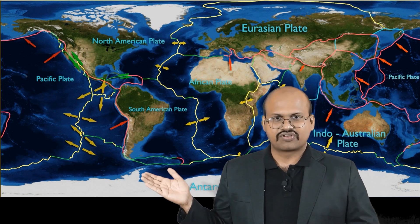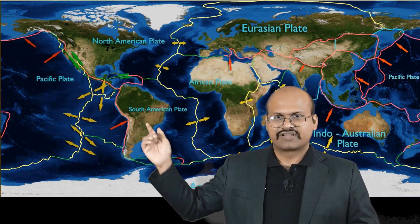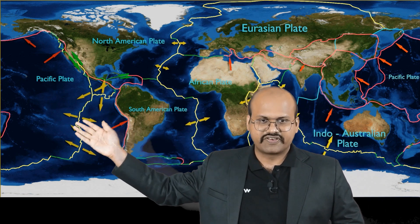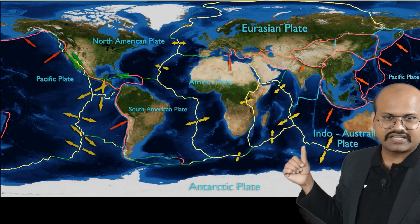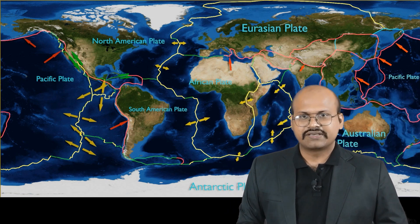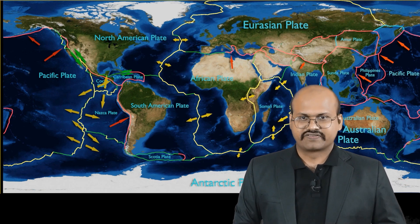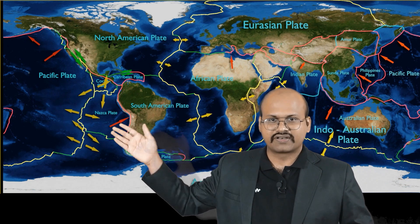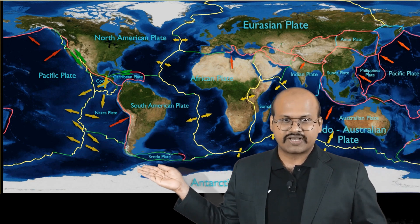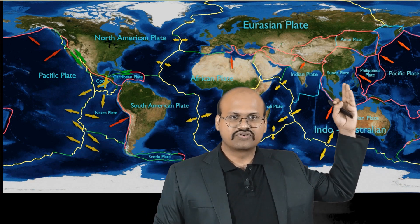The major plates are: the North American plate, Eurasian plate, African plate, South American plate, Pacific plate, Antarctic plate, and Indo-Australian plate. The minor plates include the Caribbean plate, Cocos plate, Nazca plate, Scotia plate, Philippines plate, and Sunda plate, among several others not shown in the diagram.